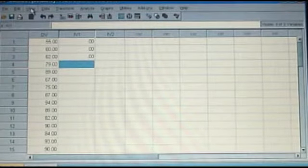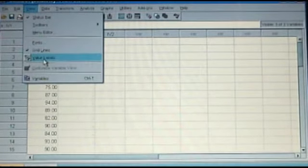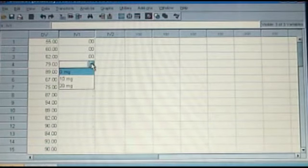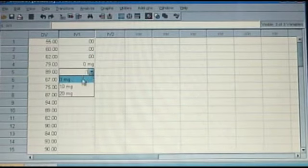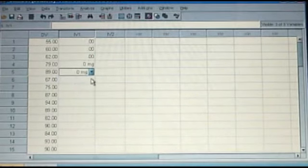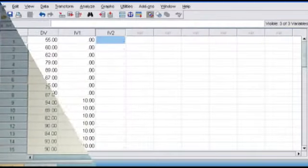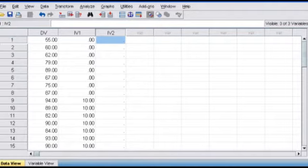Or you can go to the toolbar, click on view, click on value label, and when you right click, you'll see all the labels that you previously entered in the variable view. Now remember for IV2, which is number of hours that each student studied, we don't have more than one level. We're just going to type in the numbers as they are.